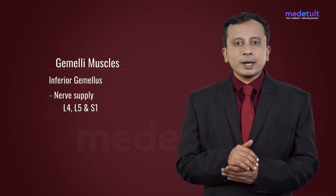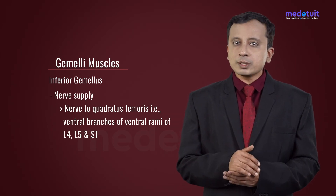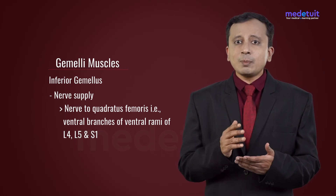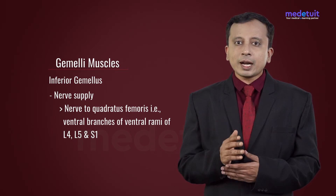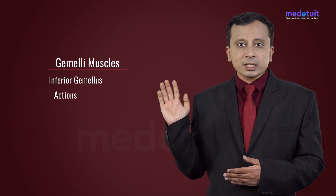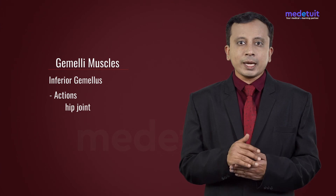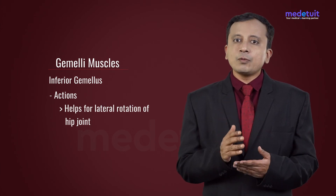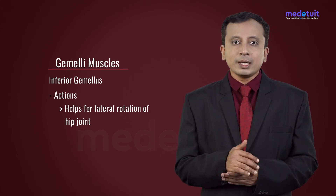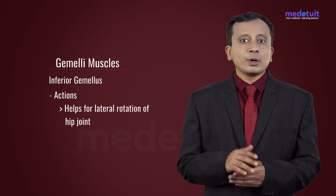The inferior gemellus is supplied by the nerve to quadratus femoris, which are the ventral branches of ventral rami of L4, L5, and S1. Whenever this muscle acts along with the obturator internus and superior gemellus, it helps in lateral rotation of the hip joint — that is the kicking movement during the time of doing a goal.